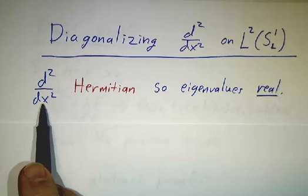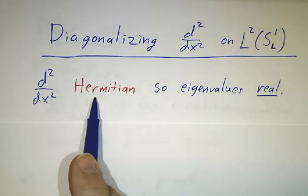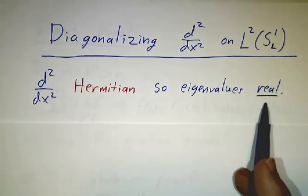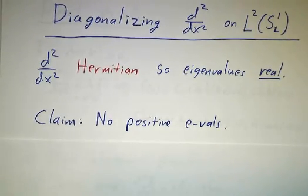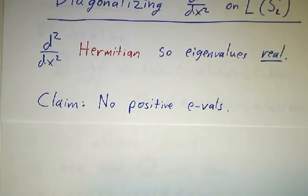So second derivative, we already established that it's Hermitian, so all the eigenvalues have to be real. And I claim that none of them are positive. And I'm going to give you two proofs of this. The first proof is slick and abstract.